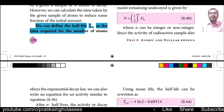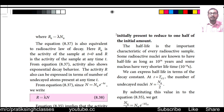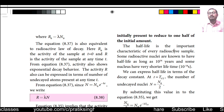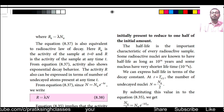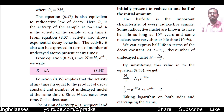The half life, T½, is defined as the time required for the number of atoms initially present to reduce to one half of the initial amount — either in number or in mass. The total time taken by atoms to decay and become half of the initial amount is called the half lifetime.